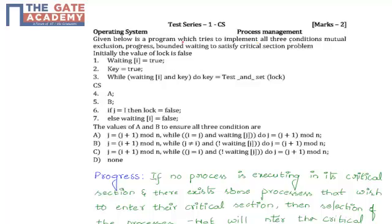Given below is a program which tries to implement all three conditions — mutual exclusion, progress, and bounded waiting — to satisfy the critical section problem. Initially, the value of lock is false. Waiting[i] = true, key = true, while waiting[i] and key, do key = TestAndSet(lock).